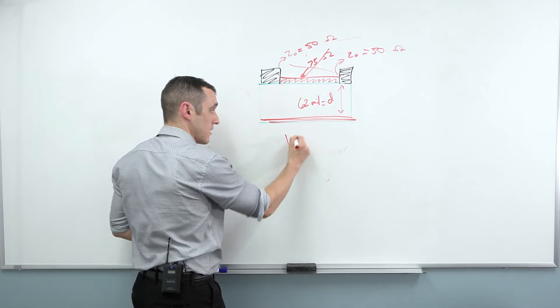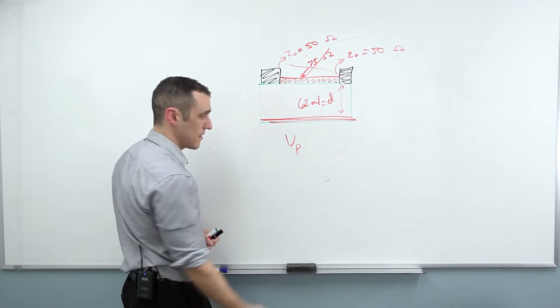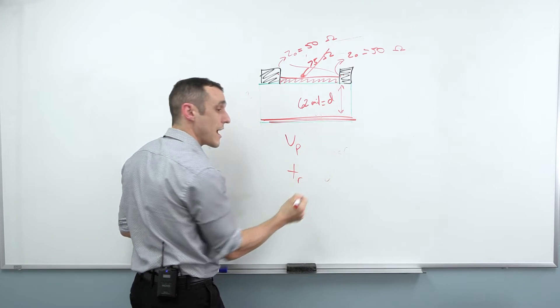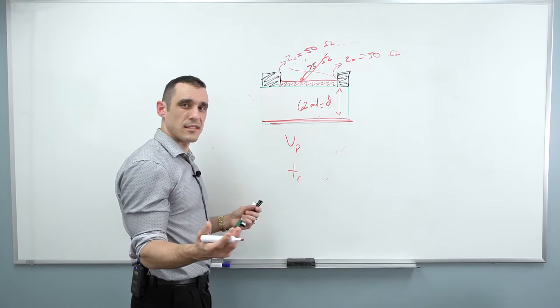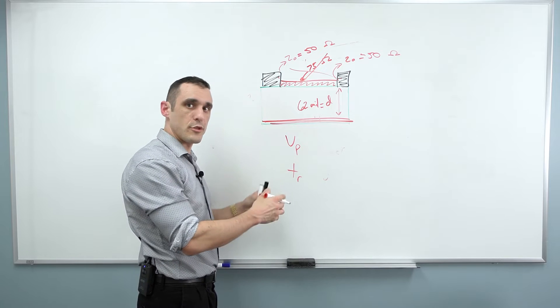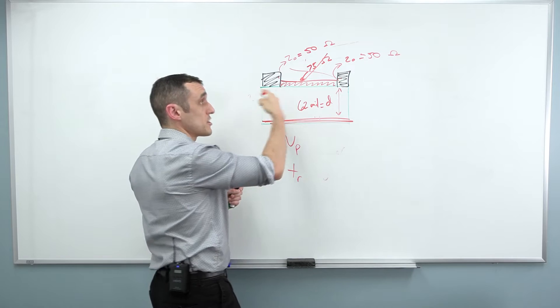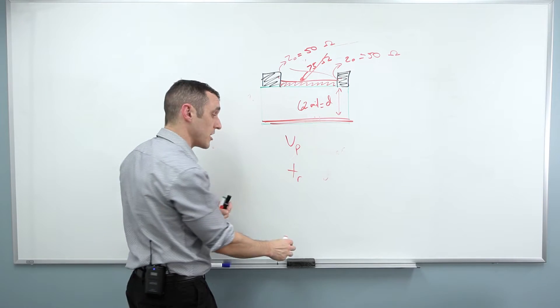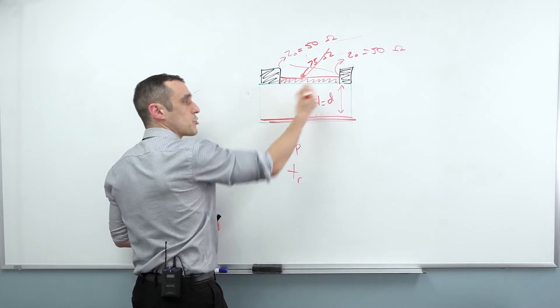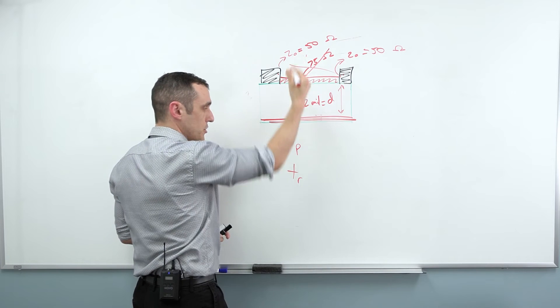So what should that limit be? This is where you need the propagation velocity, and then you need the rise time of the signal. We've discussed this a little bit in other videos, so I'll review it here because it's an important exercise to go through when you're trying to design this trace length to have a certain limit on it.